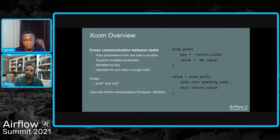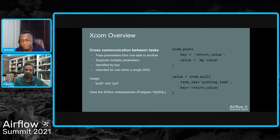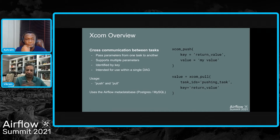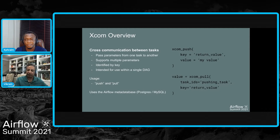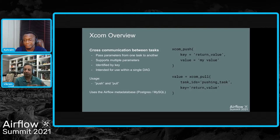XCOM itself was intended to be cross-communication between tasks. The notion is that you can pass parameters from a preceding task to another, support multiple parameters from one task to another, and each of these parameters can be identified by a key. This is primarily intended for use within a single DAG. The pattern is that of a classic push from the preceding task and pull from the receiving task, using the Airflow metadata database — whether Postgres or MySQL — as the transfer mechanism.